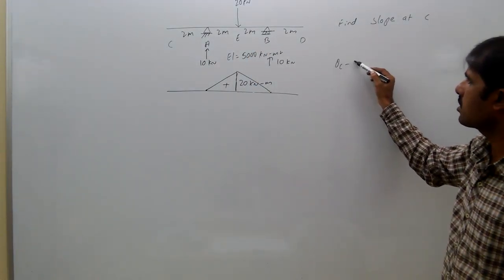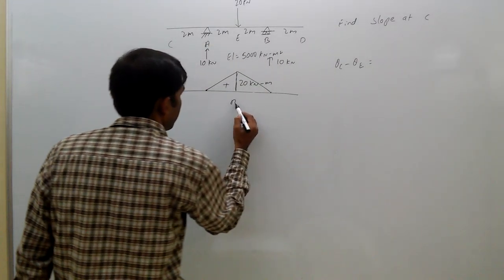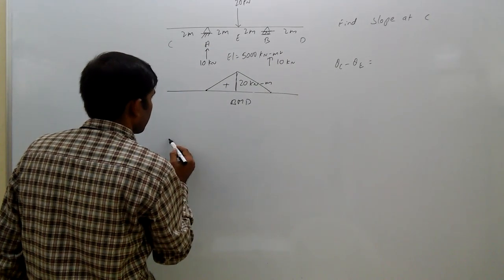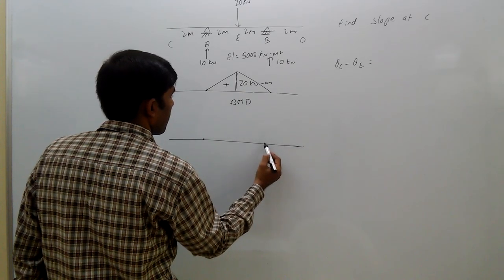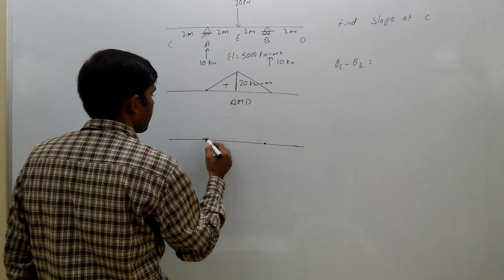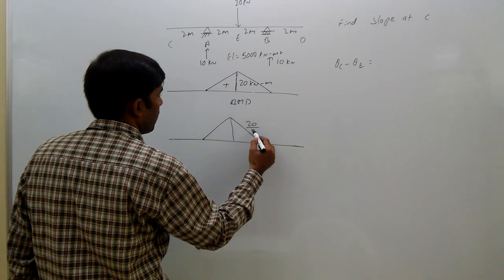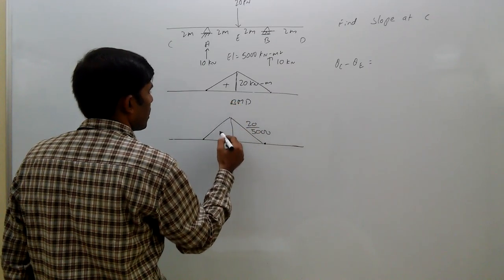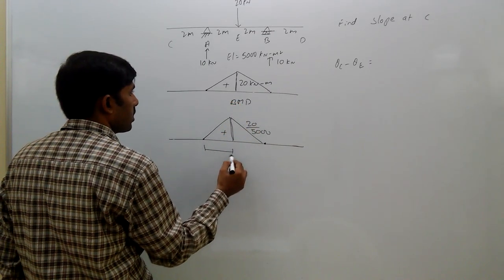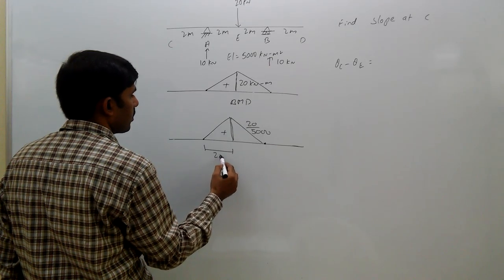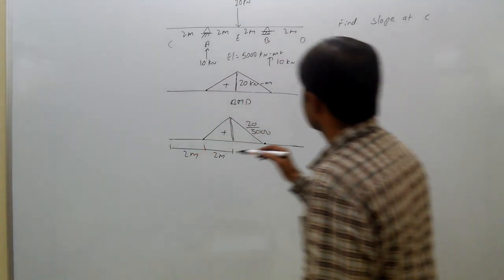What is the theta c minus theta e? So curvature diagram is, this is BMD, curvature is 20 by 5000, positive. This span is 2 meters, this is also 2 meters, so C and E.